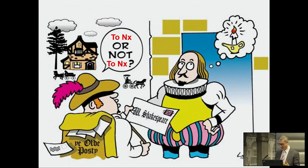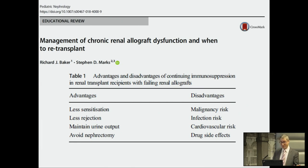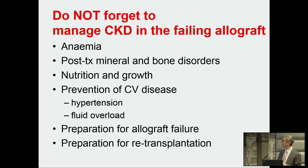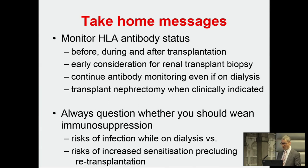It's important to think about the individual patient — what do you do when you've got chronic allograft dysfunction, a failing graft, and antibodies? How much immunosuppression do you give? There are advantages and disadvantages to continuing immunosuppression. Don't forget that taking a patient off immunosuppression may cause a rebound increase in the breadth and number of antibodies, making re-transplantation more difficult. The take-home message is to monitor HLA antibodies and always question whether you should wean immunosuppression.